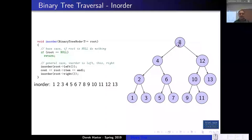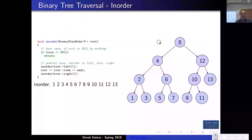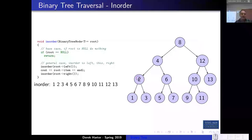For in-order traversal: if I give you the node 8 to start, you would first call in-order recursively on the left. So you'd call it recursively down the left side — 8, then 4, then 2, then 1. The left of 1 is null, so it returns immediately. Then you finally output the item. You'd output 1, try the right sub-node which is null, then return. Then you would print out 2, and then traverse down the right-hand side.